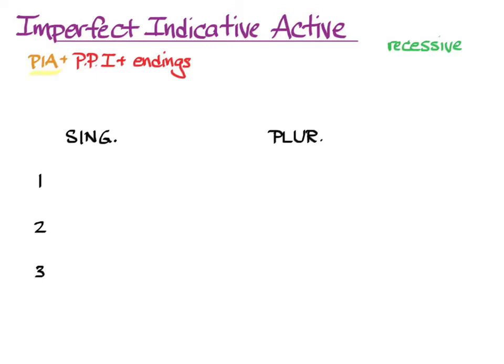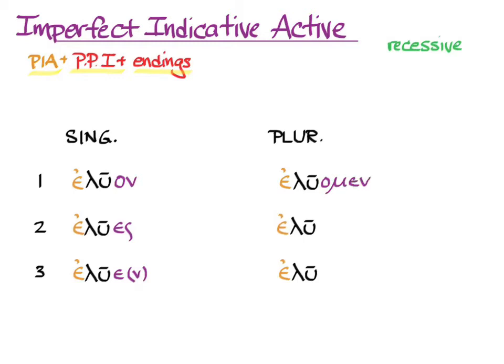You start with the augment. Add principal part one. And so here we have the persons and numbers filled in with the augment plus the stem from the first principal part of luo. And now we need the endings. So let's add them in: on, s, e or n, omen, ete, on.